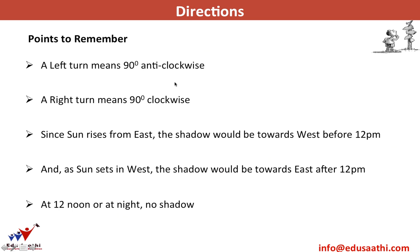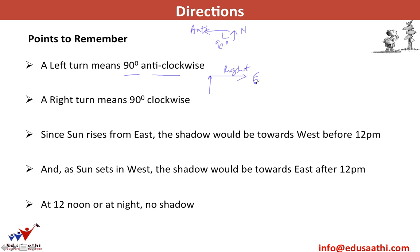A left turn means a 90-degree anticlockwise turn. If Ram is walking North and takes a left turn, he turns 90 degrees anticlockwise. Turns are always measured as 90-degree turns. A right turn means a 90-degree clockwise turn — if walking North and turning right, he starts walking East.